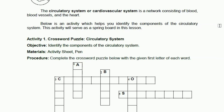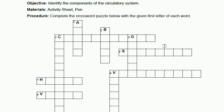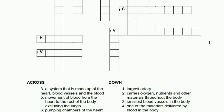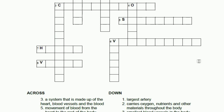This activity will serve as a springboard for your lesson. On your answer sheets, write Activity 1 under Lesson 4 — Activity 1: Crossword Puzzle, Circulatory System. You will identify the components of the circulatory system. Please copy the crossword puzzle carefully on your answer sheets, making sure to draw the boxes neatly so nothing gets lost. Just copy this one crossword puzzle.